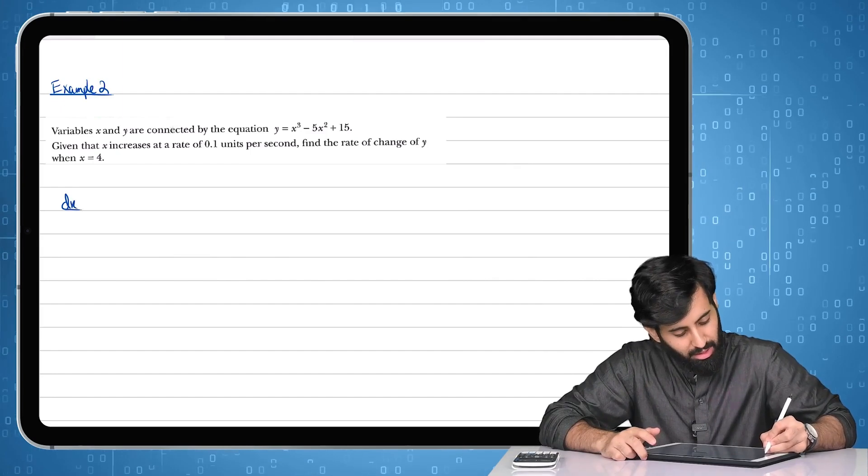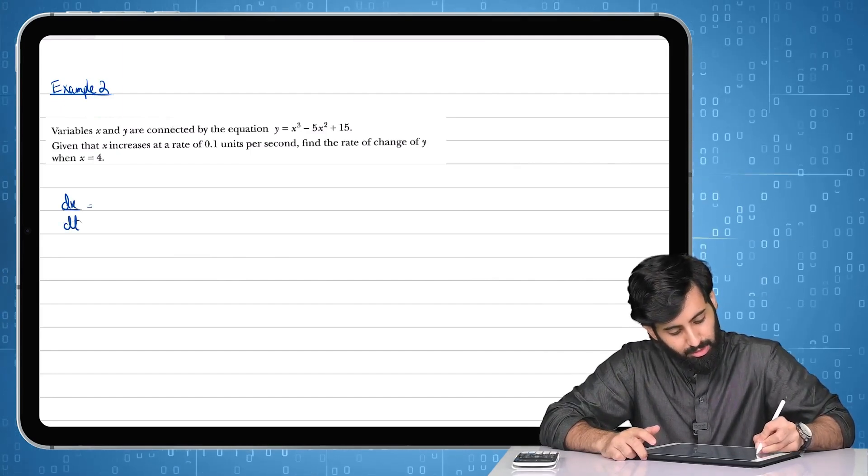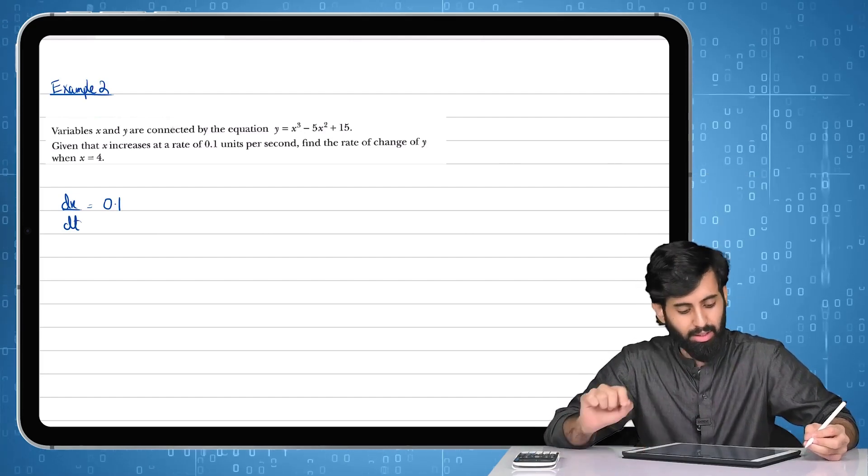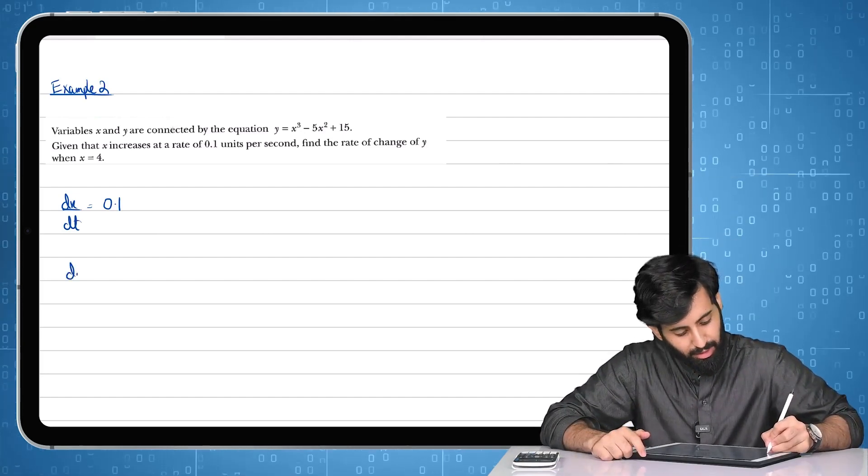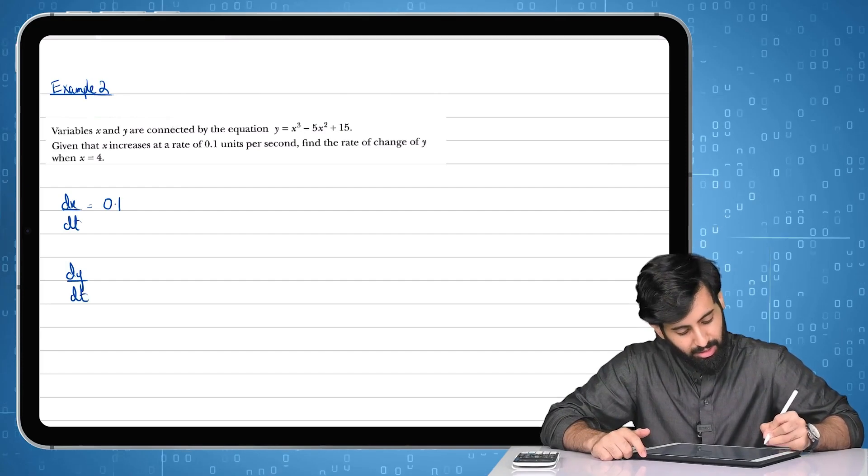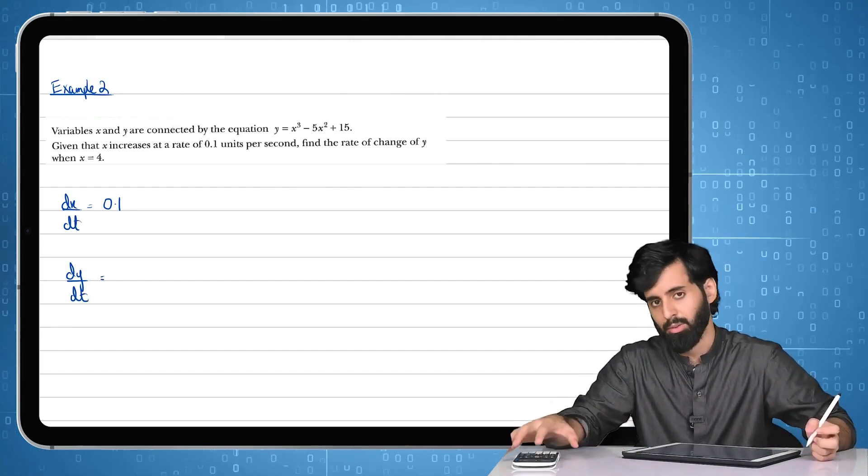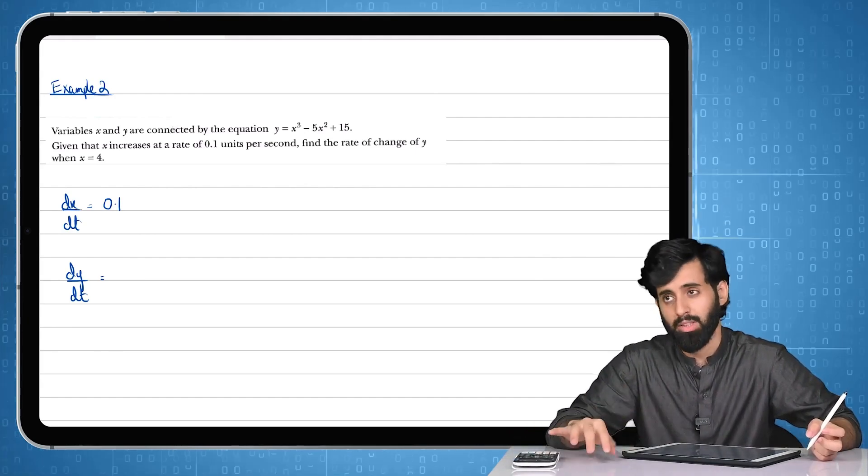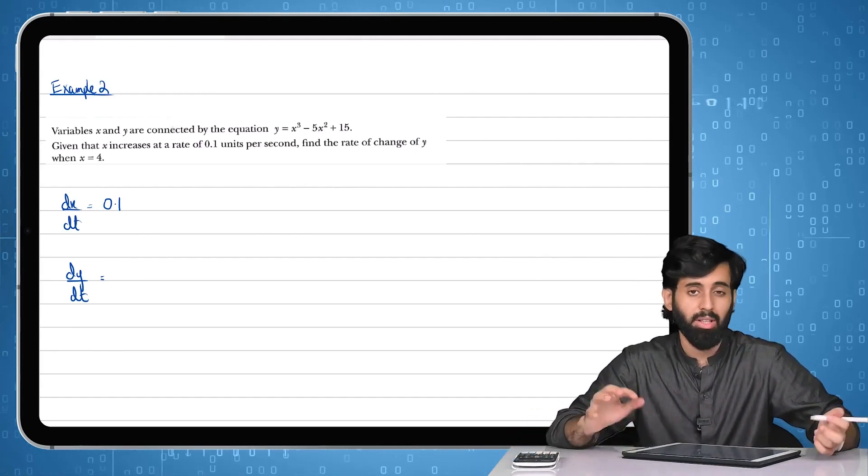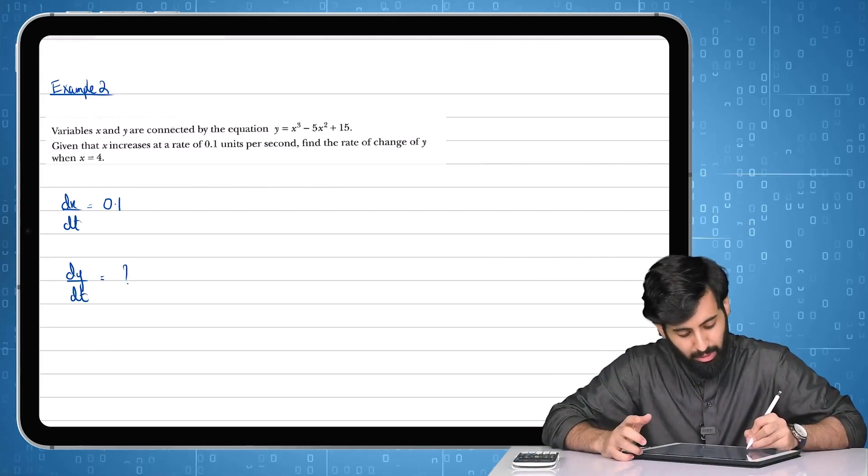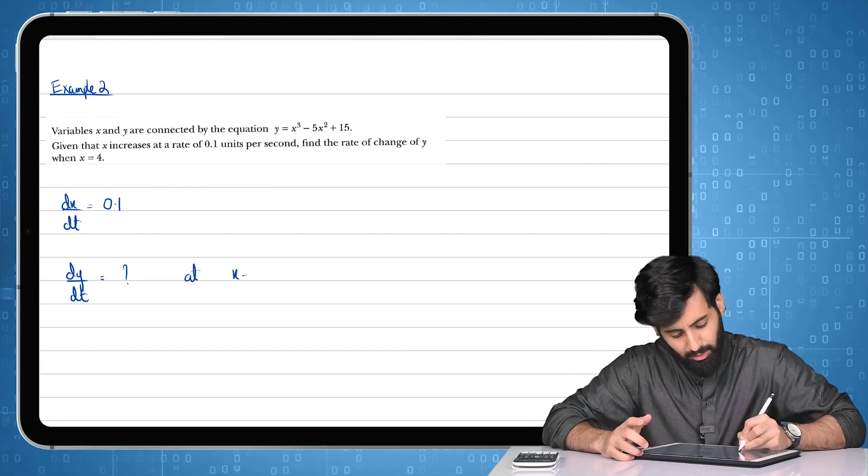Find the rate of change of y. This basically means that we have to find out dy/dt. Remember when I told you guys in the earlier example, if it's asking for the rate of change of y then dy/dt, when it says volume dv/dt, area da/dt. So this is what you and I have to find out. And when do we have to find this out? At the instant when x equals 4.